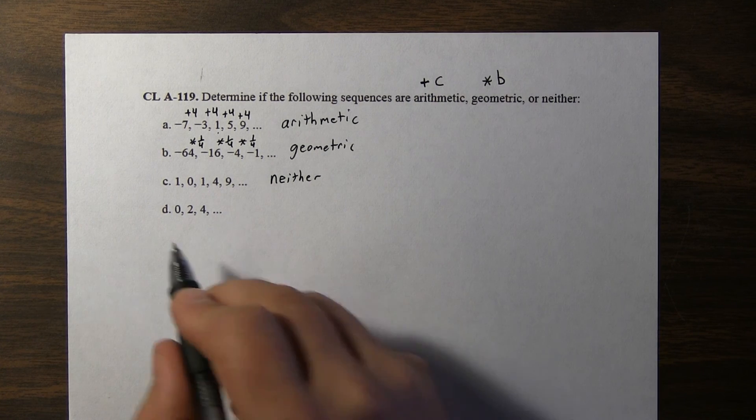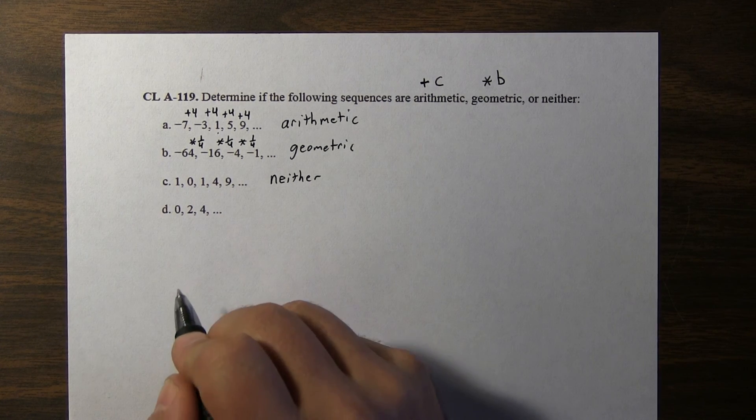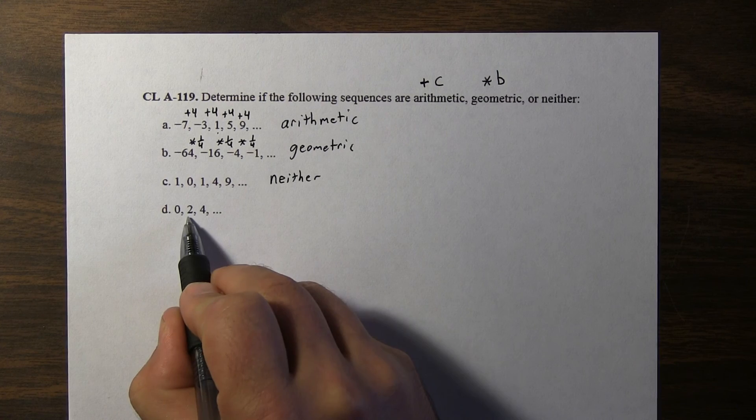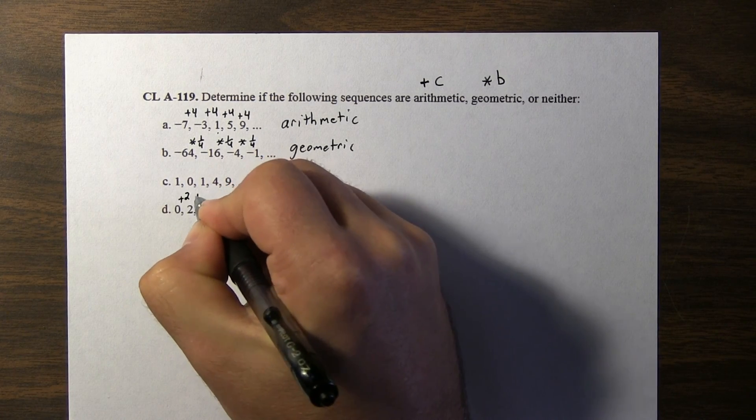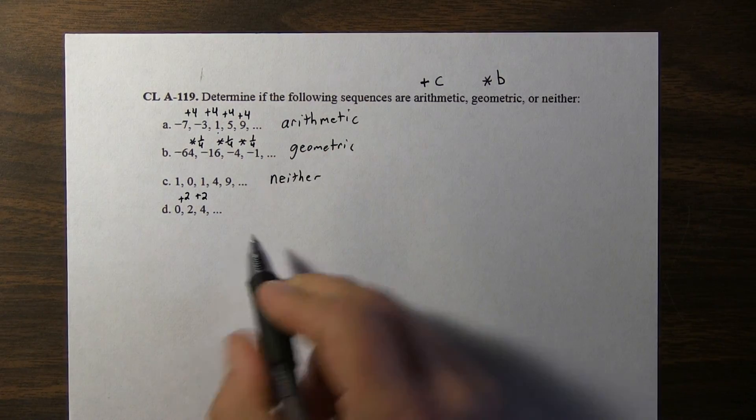Let's look at the next one. 0 plus 2 is 2, 2 plus 2 is 4. Okay, so it appears that each term is increasing by 2. So this one is arithmetic.